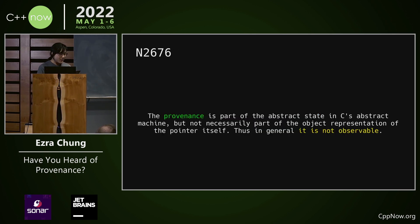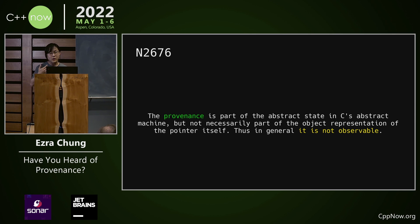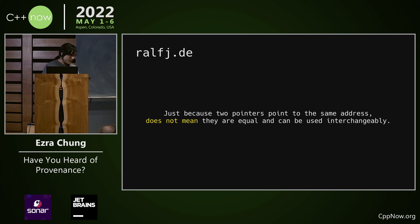Before the exciting stuff, let's establish the status quo. N2676 states that provenance is part of the abstract state in C's abstract machine, but not necessarily part of the object representation of the pointer itself. Thus, in general, it is not observable. This describes both the C and C++ languages today. Also, phrased differently, this is almost paraphrasing a note in the C++ standard too.